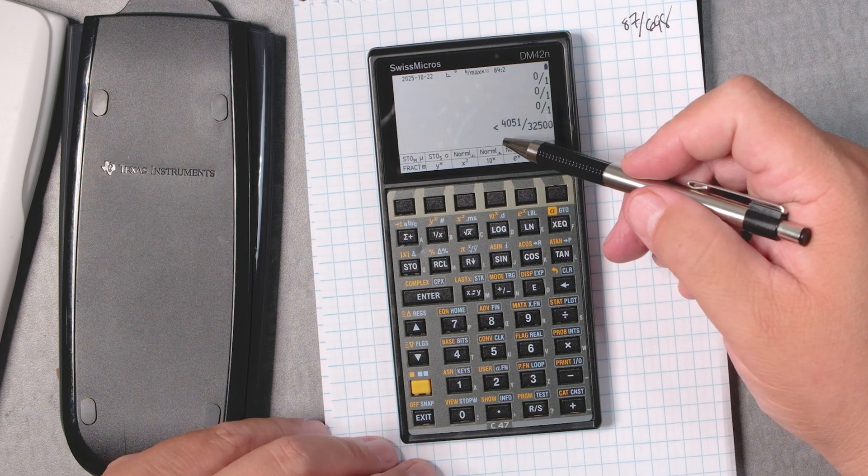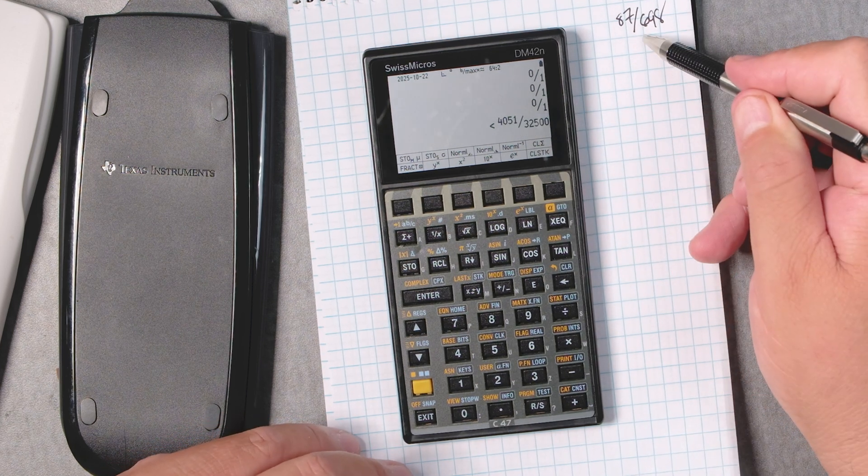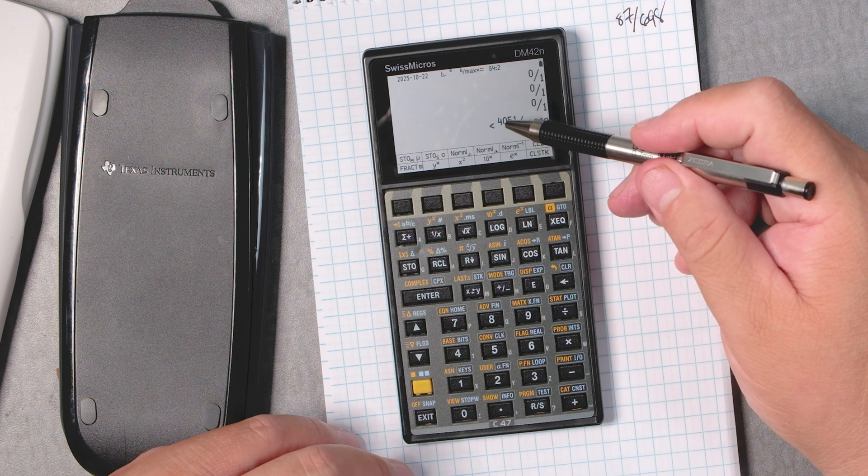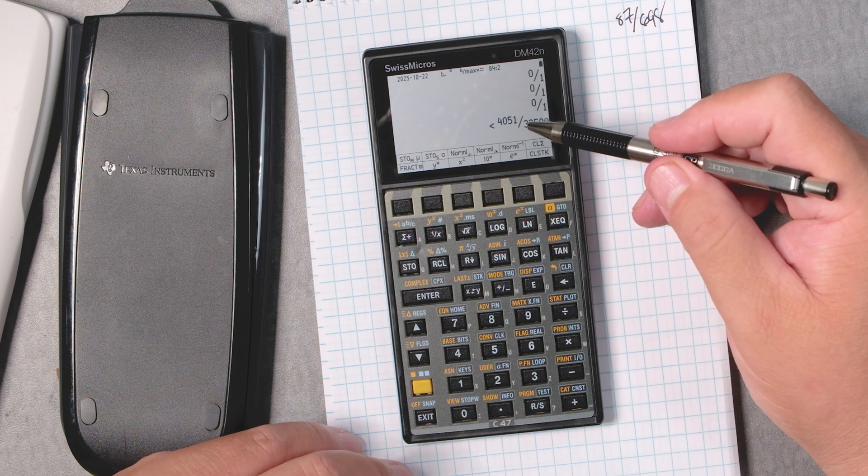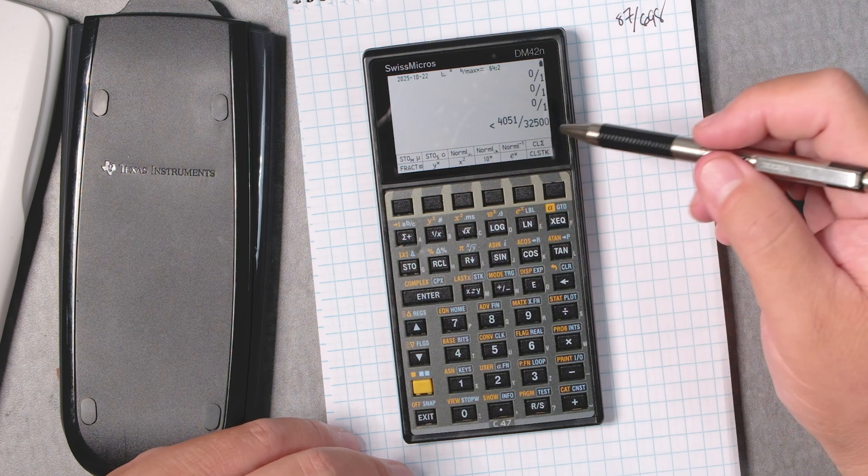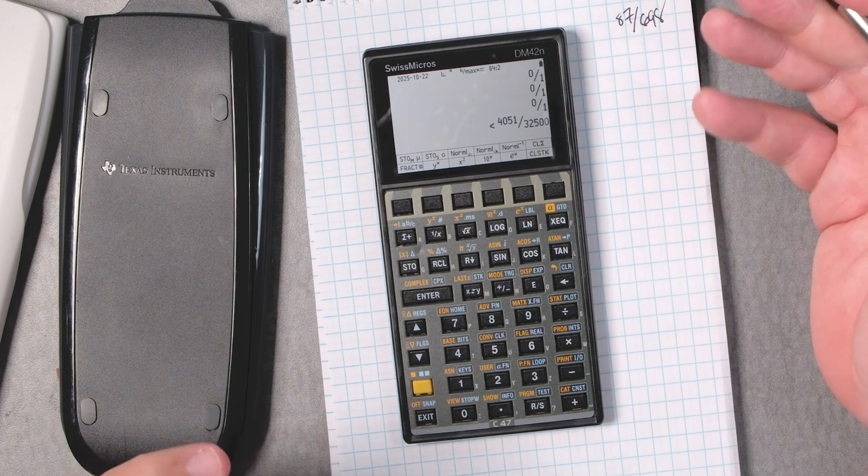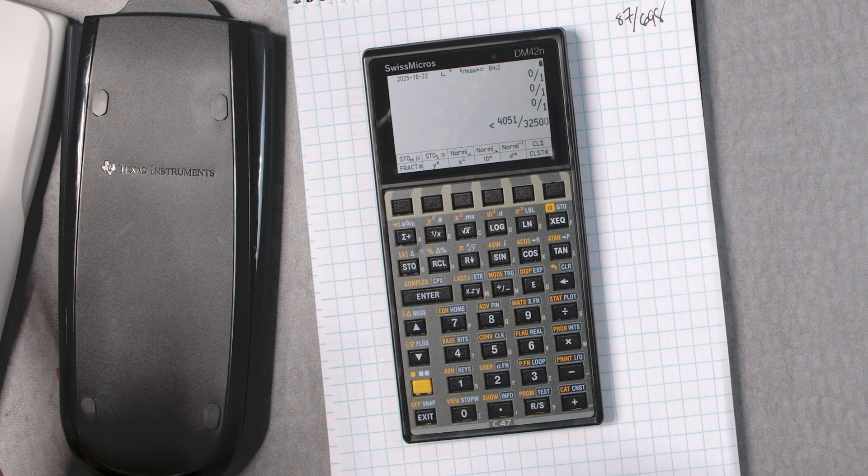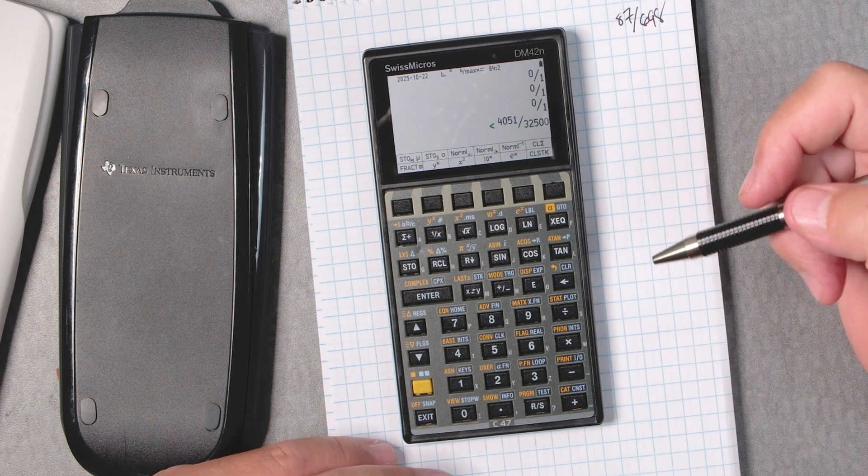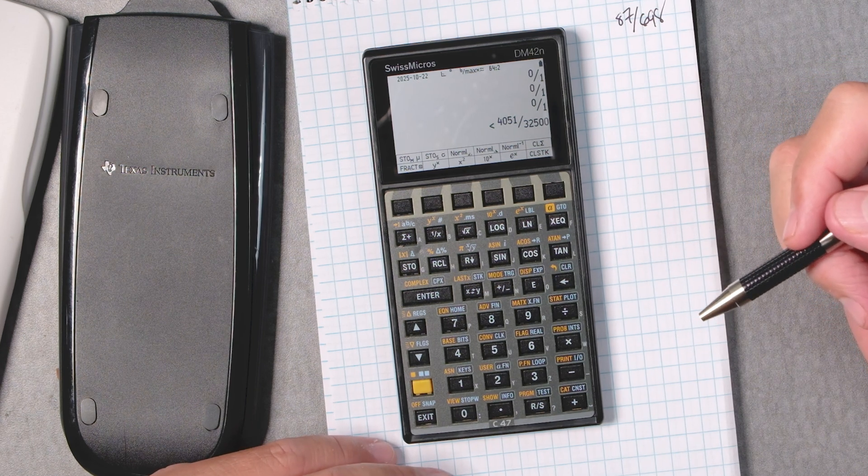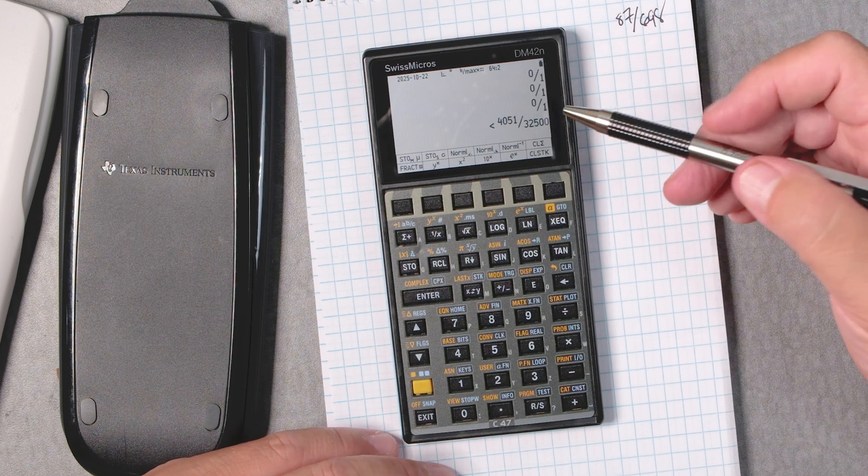And it gives me this inequality. And it's a whole different fraction. 4051 divided by 32,500. This is the approximation of that fraction because it's converting back into a fraction that it's trying to give you an approximation for.